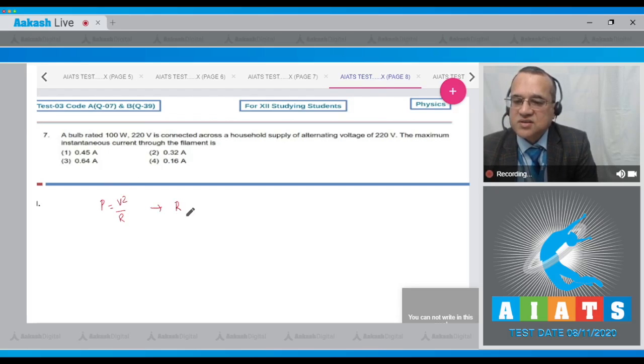Let us find its resistance. The resistance will be equal to V squared by P. V is given 220, and the power consumption was equal to 100. So this becomes its resistance.